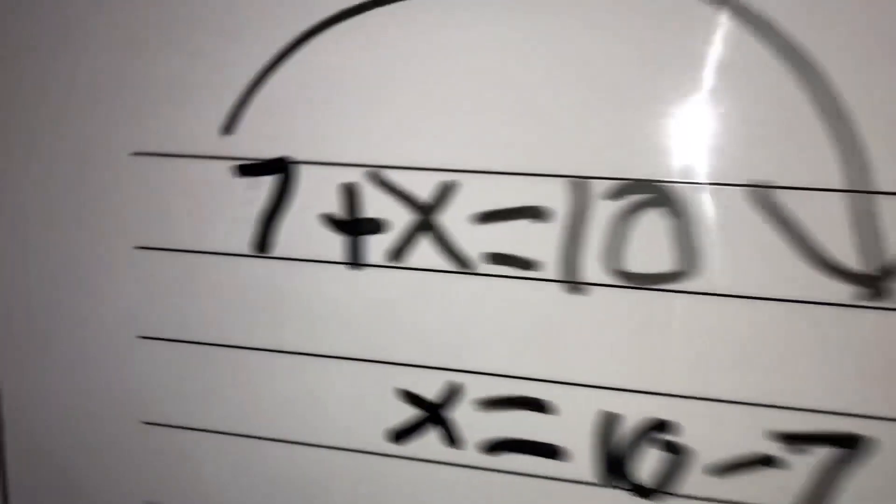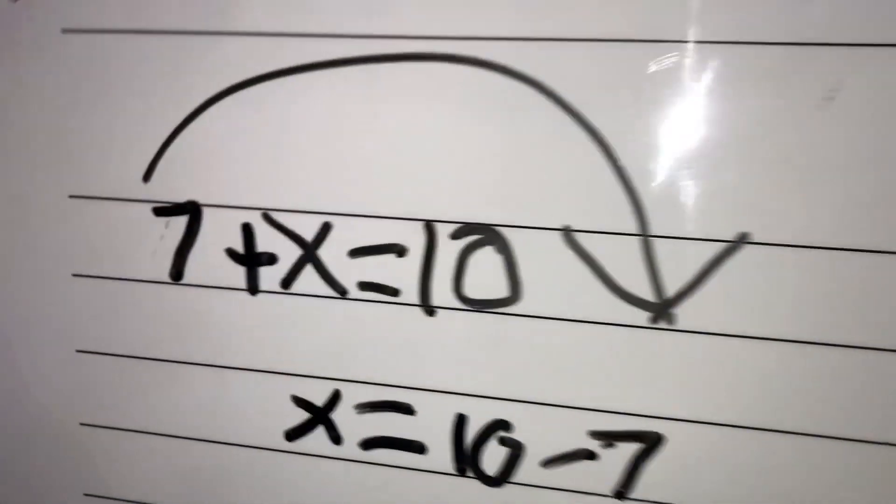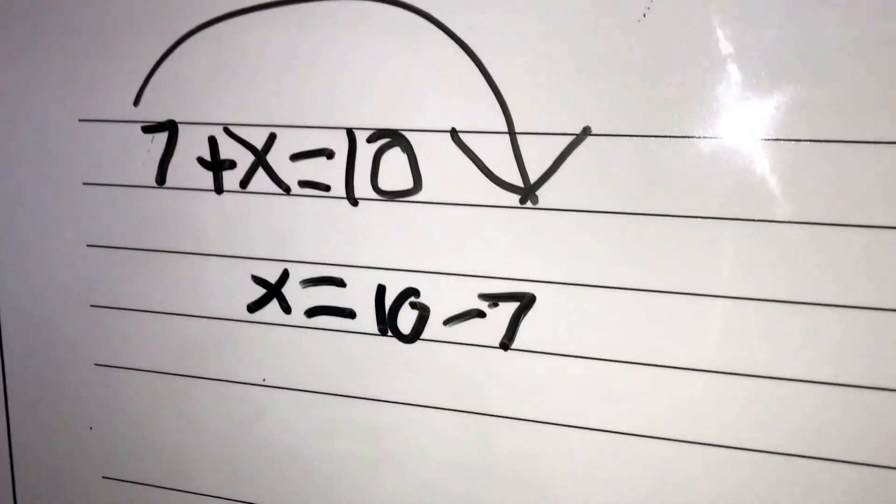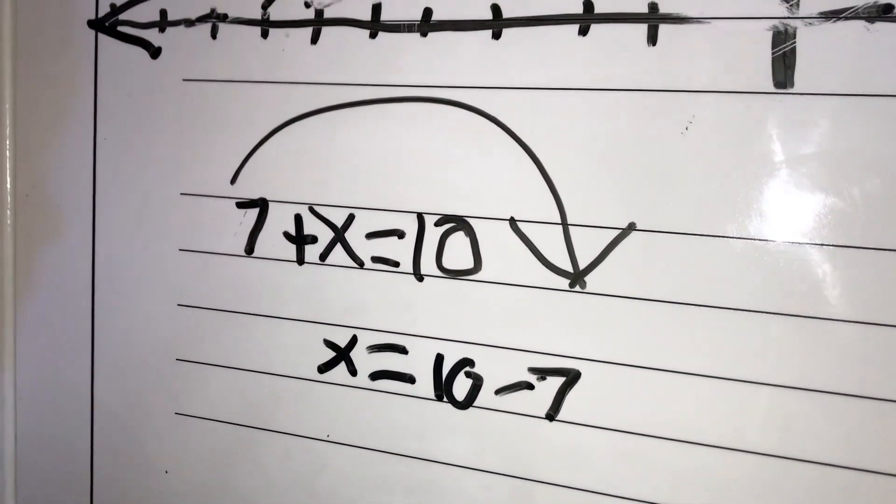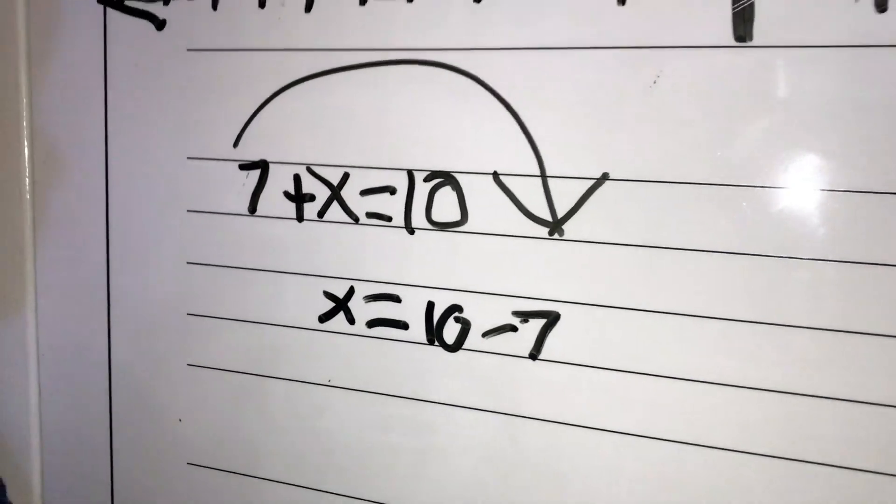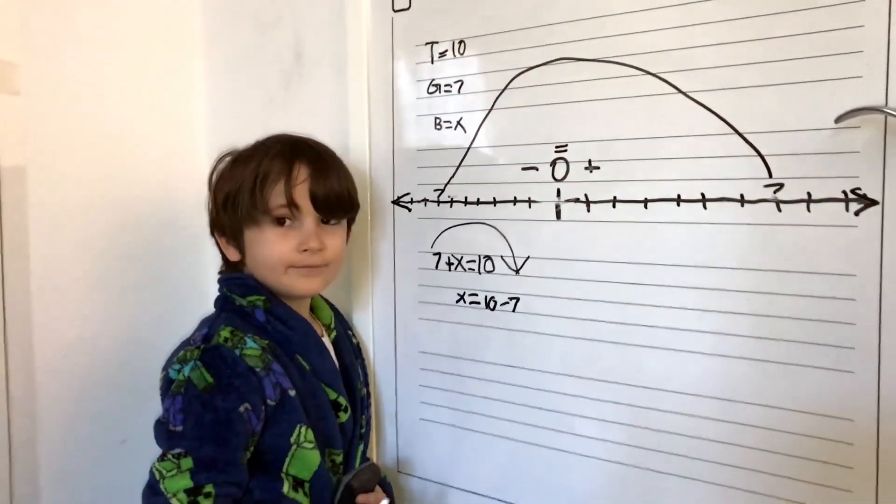If this would be a negative seven, it would actually become positive seven. But it was a positive seven, so it became a negative. It took its opposite form, a mirror reflection of itself. So now we have x equals ten minus seven. What's the next step?